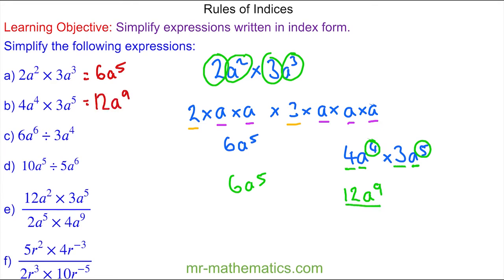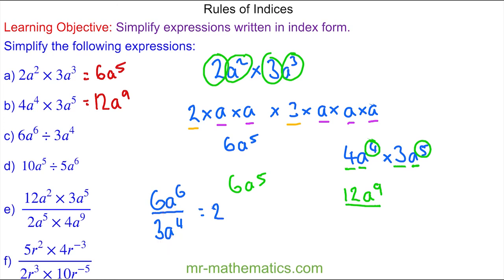In question C we have 6a to the 6 divided by 3a to the power of 4. I write it as a division because you can see it is 6 divided by 3 which is 2, and then we can use the division rule to take the 4 away from the 6, again because we have the same base. So we have 2a to the power of 2, or 2a squared.